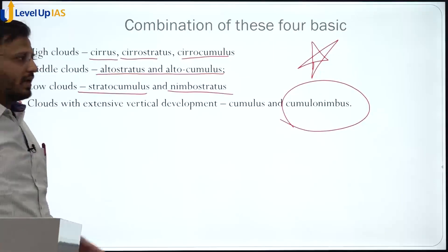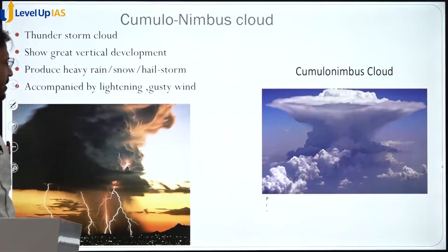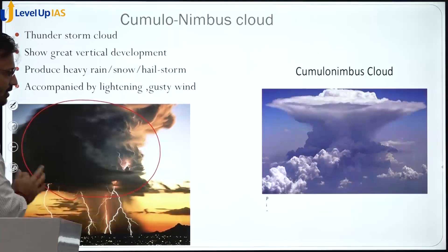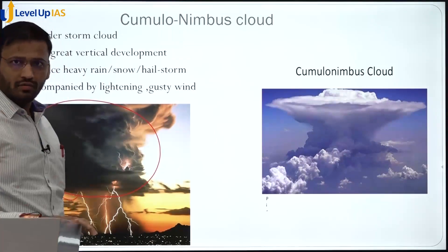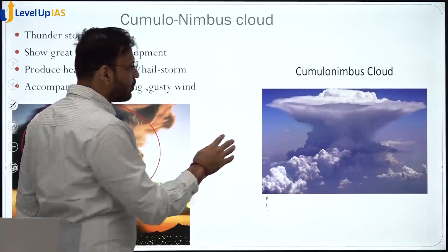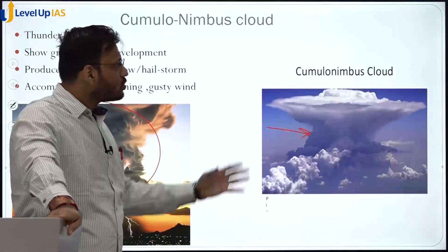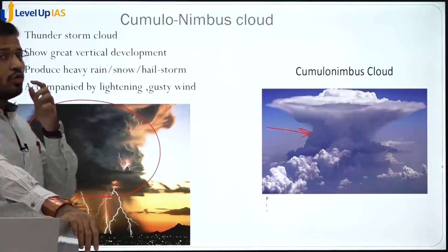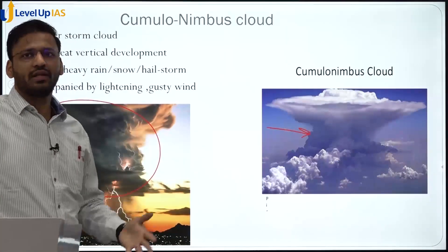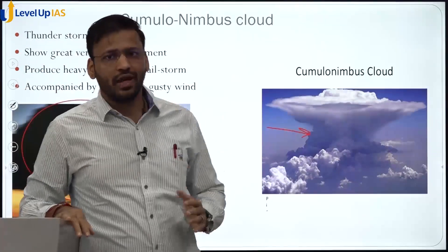Cumulonimbus is a very dangerous cloud — it creates storms, gusty winds, and heavy torrential rainfall. The vertical development of cumulonimbus clouds is very huge. Even if an aeroplane passes through these clouds it will shake very violently for a minute or so. Cumulonimbus clouds have a huge water content and produce lots of lightning. These are the four important cloud types and their combinations found in nature.